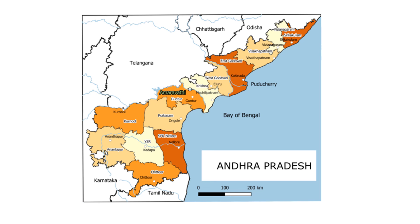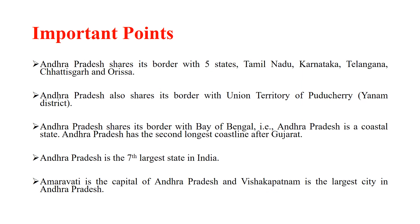There are several minor rivers of Andhra Pradesh that will be discussed in a separate video. Andhra Pradesh shares its borders with Tamil Nadu, Karnataka, Telangana, Chhattisgarh, and Orissa, and also with the Union Territory of Puducherry. Andhra Pradesh is a coastal state and has the second longest coastline after Gujarat. Andhra Pradesh is the seventh largest state in India, and India is the seventh largest country in the world. Amaravati is the capital of Andhra Pradesh, and Vishakhapatnam is the largest city.